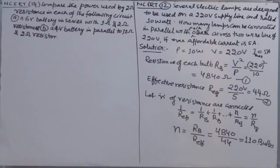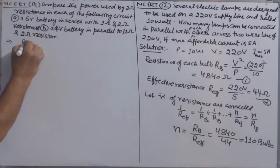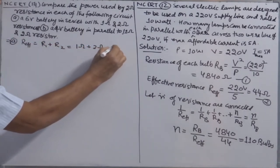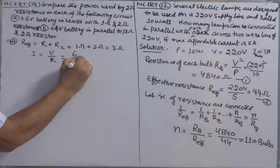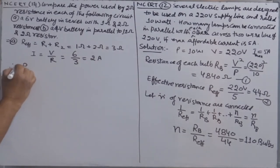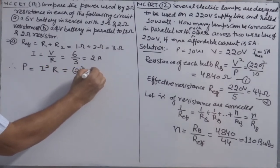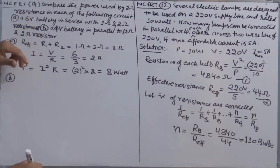Second question: compare the power used in a two-ohm resistance in the following cases. Case one: a 6 volt battery in series. Find effective resistance first — in series, R_total = 1 + 2 = 3 ohm. Current I = V / R = 6 / 3 = 2 ampere. Therefore power = I² × R = 2² × 2 = 8 watt. We use current here because in series combination, current remains constant.